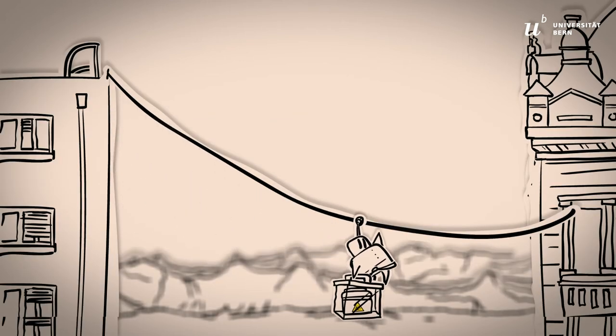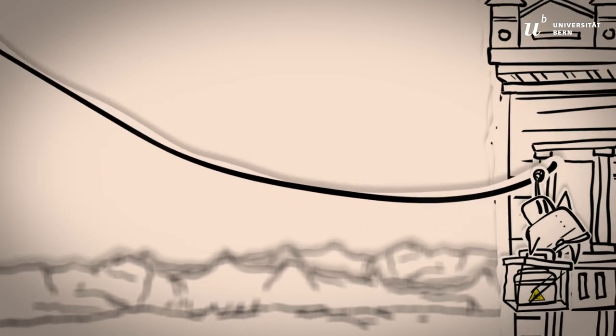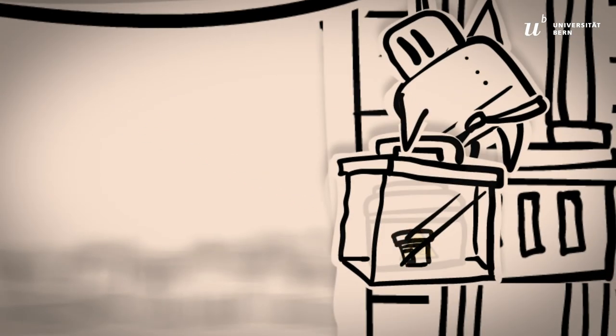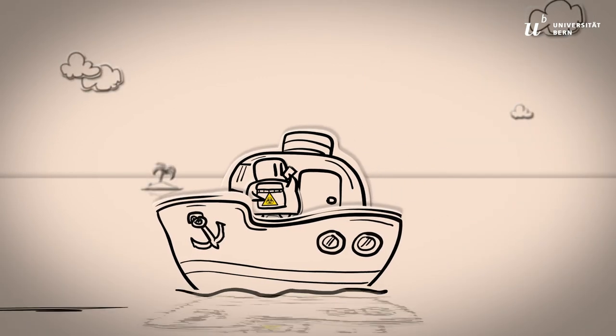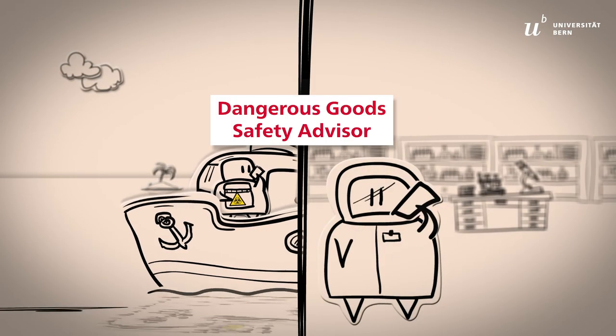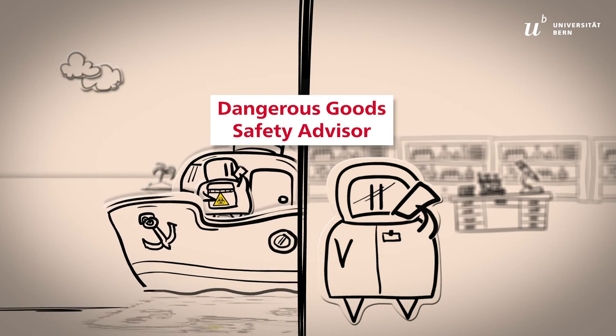For transport from building to building, use a robust and leak-proof container as a third layer of outer packaging. For national and international shipping, consult the Dangerous Goods Safety Advisor from the Risk Management Department.